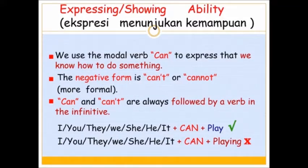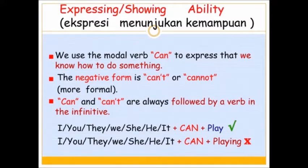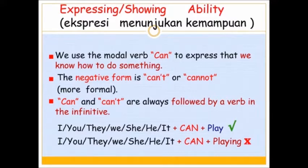Contohnya, di layar kalian bisa lihat: subject — I, you, they, we, she, he, it — plus can, plus play. That's correct! Can diikuti kata kerja verb asli tanpa tambahan apapun. Sedangkan can plus 'playing' is incorrect, karena setelah can tidak ditambahkan apapun, hanya kata kerja asli — verb in infinitive.